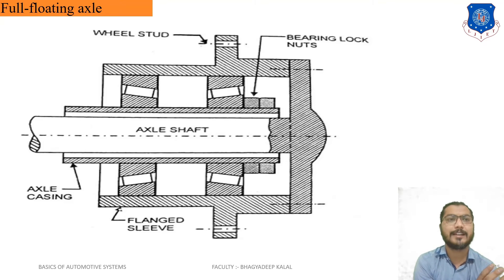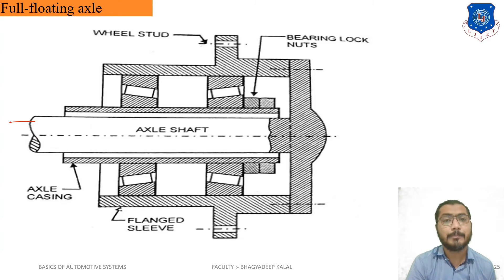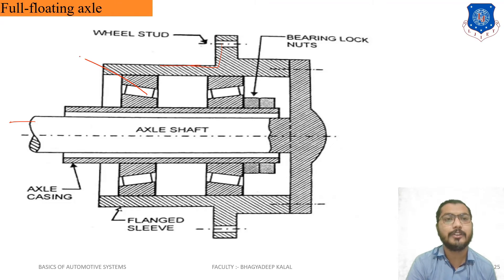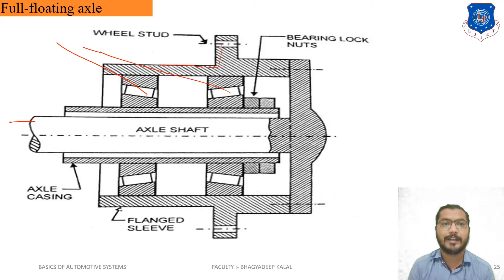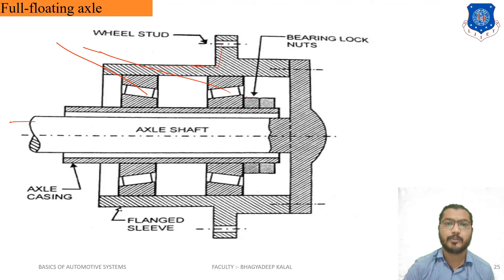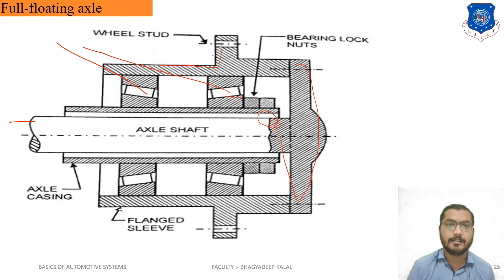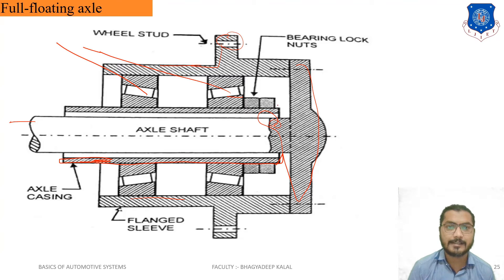Full-floating axles are different from semi-floating axles — the axle is fully floated. One end is similarly connected to the differential mechanism. However, the casing here is connected with two tapered bearings, which allow self-alignment when loads come on the wheel. Bearing lock nuts are provided to lock the bearings. The axle shaft is connected to the wheel hub.